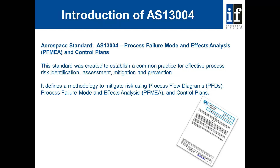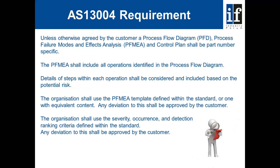Even with an effective problem solving process, the goal of zero defects cannot realistically be achieved without the use of FMEA. Unless otherwise agreed by the customer, a process flow diagram, process failure modes and effects analysis, and control plan shall be part number specific. The PFMEA shall include all operations identified in the process flow diagram. Details of steps within each operation shall be considered and included based on the potential risk. The organization shall use the PFMEA template defined within the standard or one with equivalent content. Any deviation to this shall be approved by the customer.